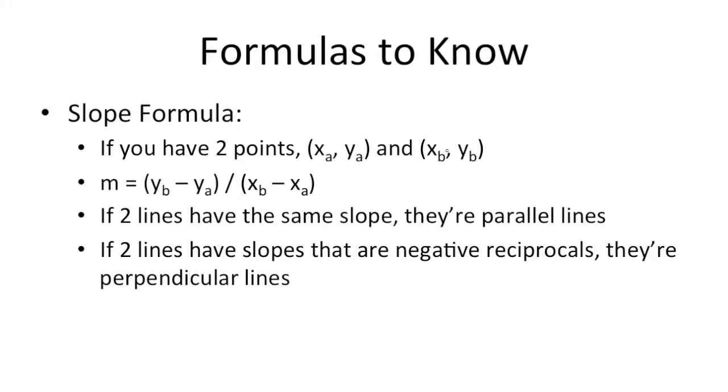Another formula you're going to need to know is the slope formula. Slope refers to the rise and run between two points on a line on a Cartesian plane. So if we have two points here, the run refers to the horizontal distance between the two points, and the rise refers to the vertical distance.